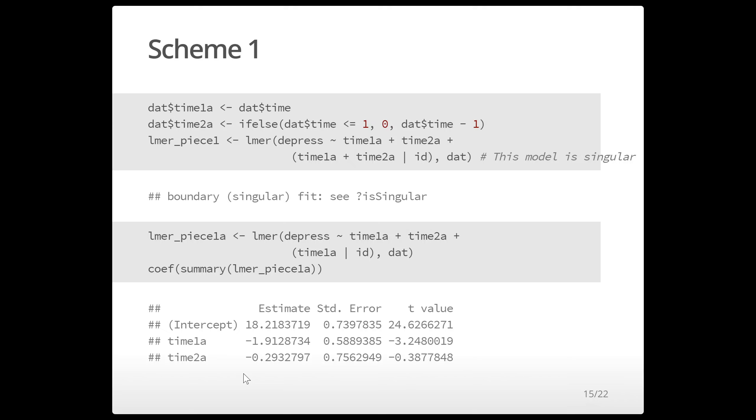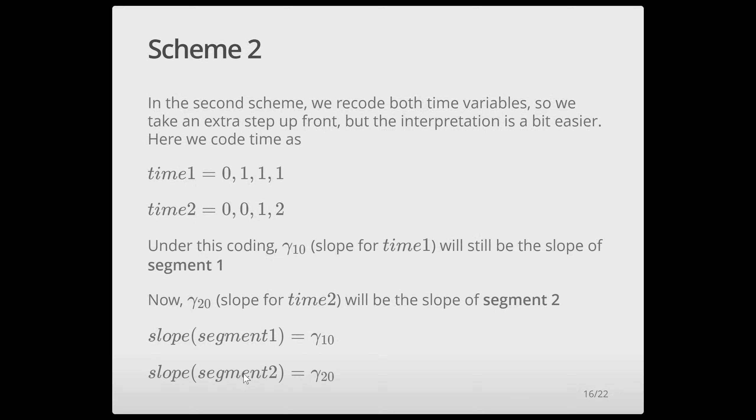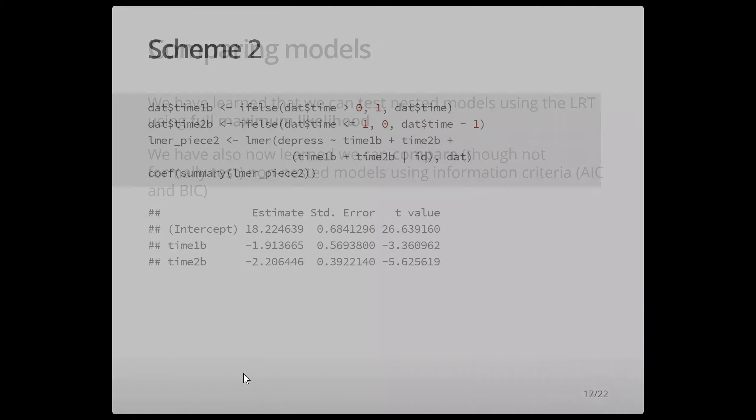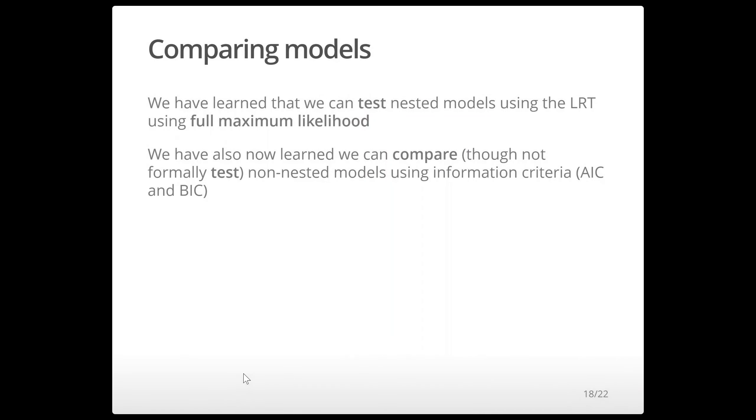So we've learned that we can test nested models using the likelihood ratio test with full maximum likelihood and that we can compare, though not formally test, non-nested models by looking at their information criteria which is penalized likelihood or penalized deviance.